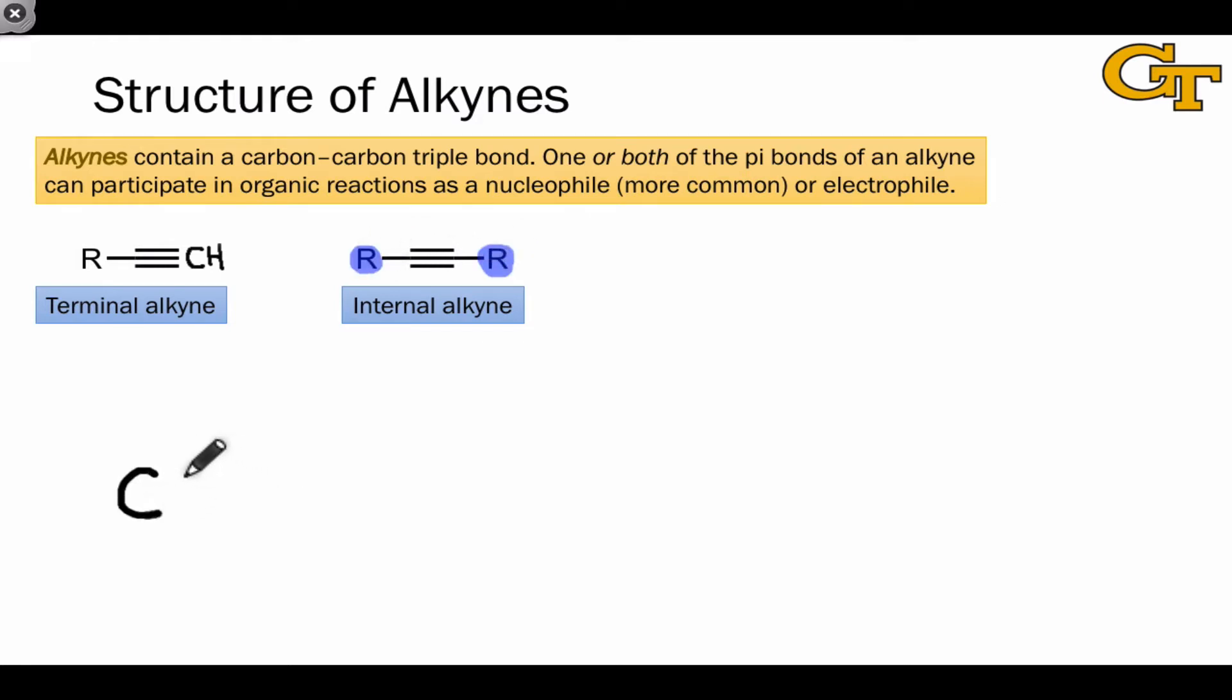The carbon-carbon triple bond itself is composed of one sigma bond and two pi bonds. And because each carbon is connected to only two other atoms, the carbons display sp hybridization and linear geometry.